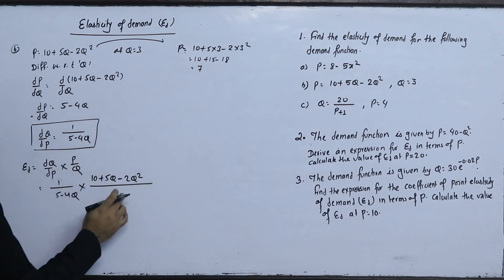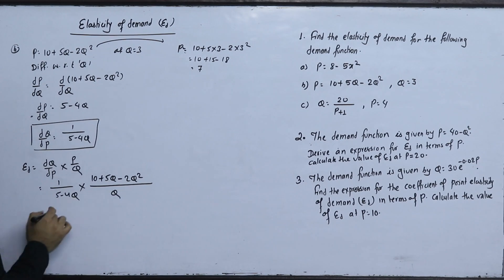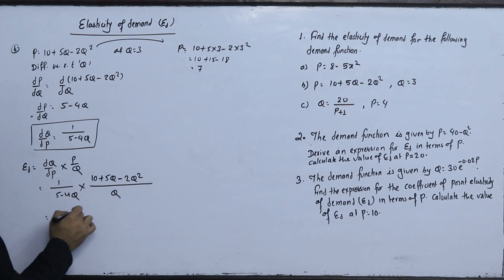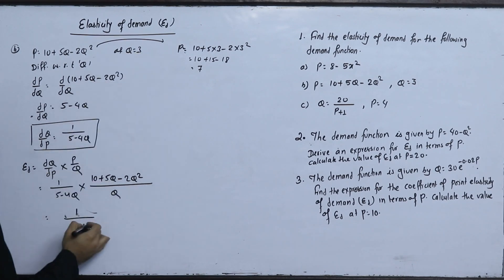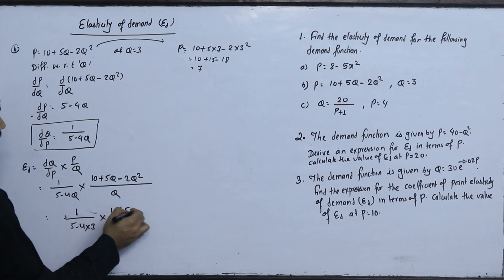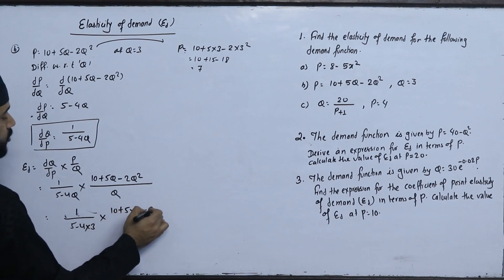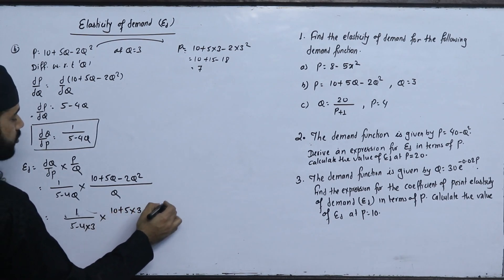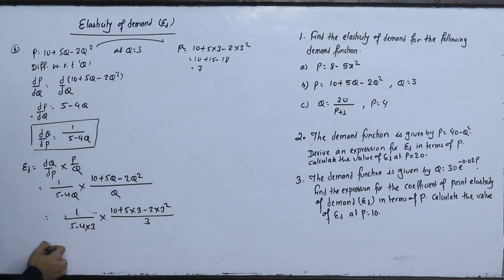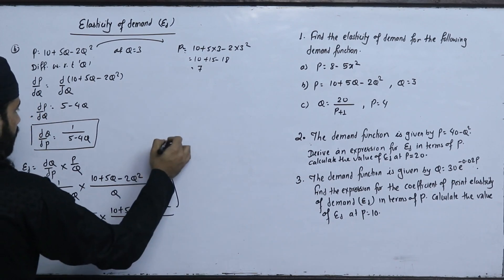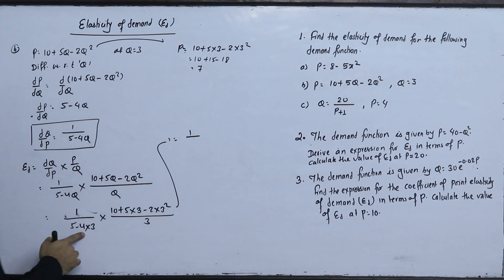Substituting q equals 3: elasticity equals 1 upon 5 minus 4 into 3, into 10 plus 5 into 3 minus 2 into 3 squared upon 3. This simplifies to 1 upon minus 7 into 7 by 3, giving minus 1 upon 3.